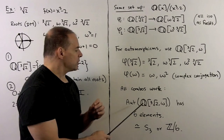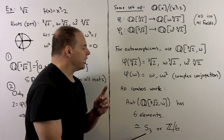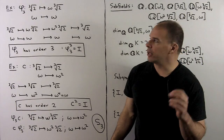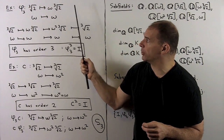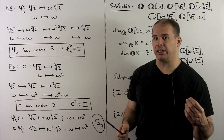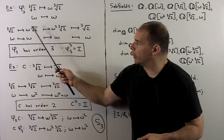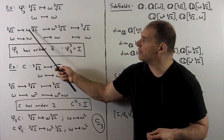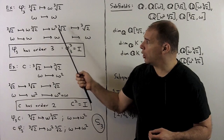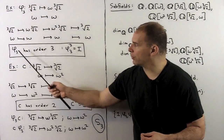That means the automorphism group of Q(∛2, ω) has six elements, so it is isomorphic either to S₃ or to the cyclic group of order 6. Treating automorphisms as group elements under composition: φ₃ carries ∛2 to ω∛2 and fixes ω. To find the order of φ₃, track ∛2: applying φ₃ once gives ω∛2; again, ω stays and ∛2 maps to ω∛2, giving ω²∛2; a third time, ω² stays and ∛2 maps to ω∛2, giving ω³∛2 = ∛2. So φ₃ has order 3.